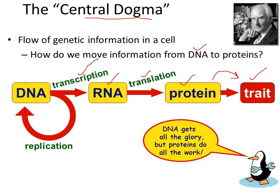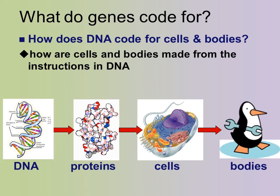But how do genes code for proteins? Particular genetic information present on the DNA will synthesize particular proteins, and these proteins will make the cells, which will combine to make the babies or offspring. But how is this information transferred and utilized for protein synthesis?